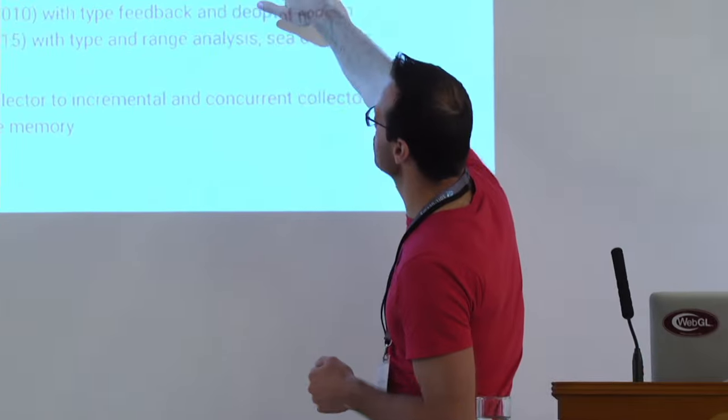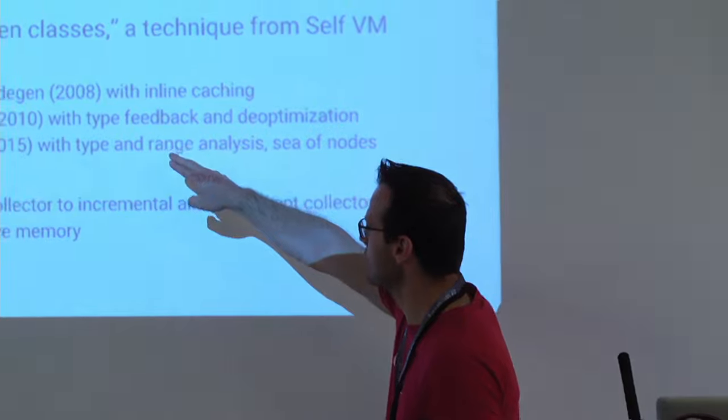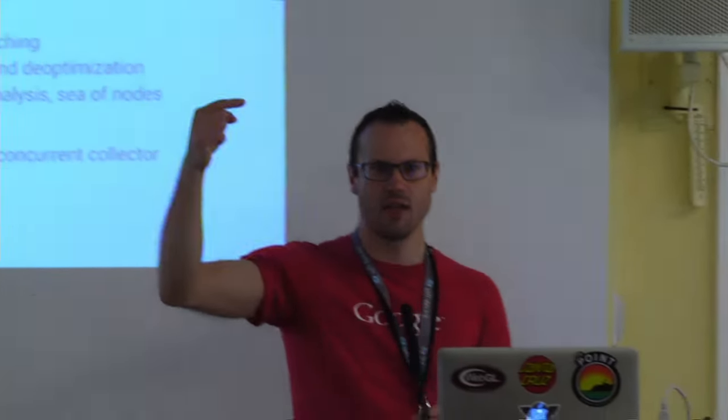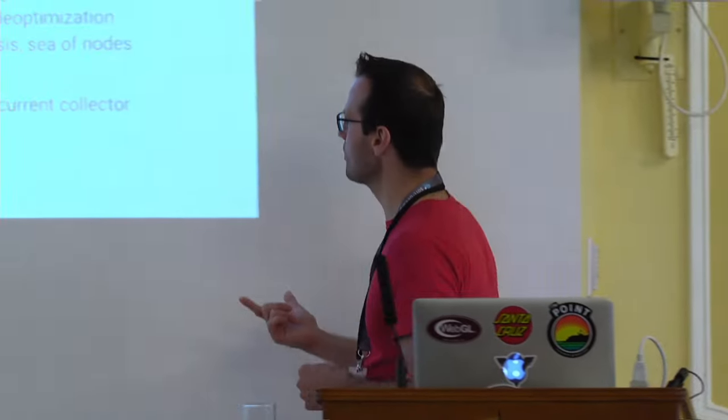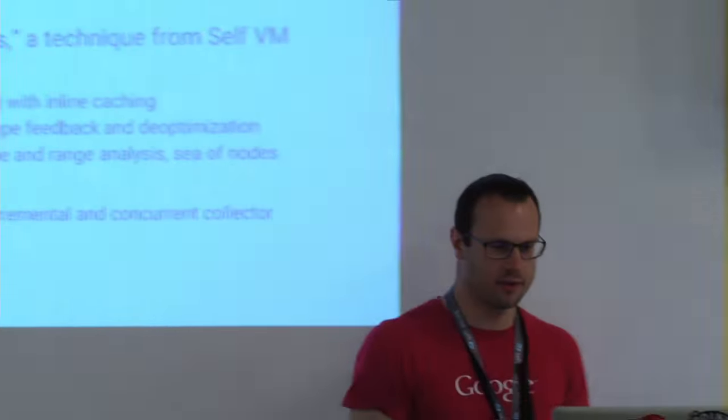Adding an optimizing JIT compiler made V8 another 10 times faster. The main technique for making JavaScript objects fast — hidden classes, called maps — was adapted directly from the Self VM. There are actually three JITs inside V8 today. The original JIT walks the AST and spits out code, uses inline caches so property accesses have a fast case, and collects type feedback.